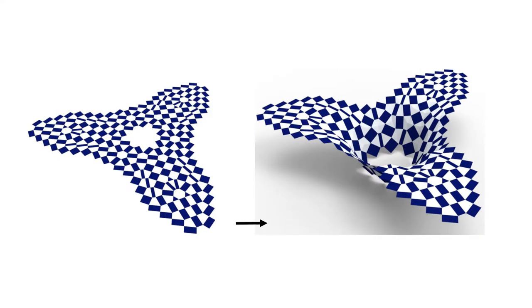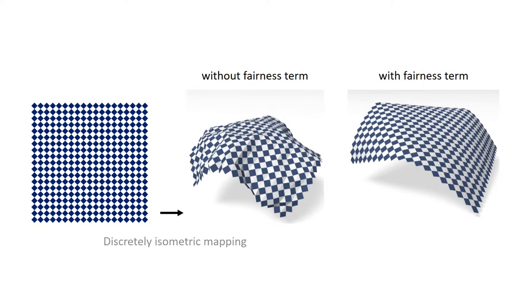By treating two patterns as discrete surfaces, a discrete map between the two can be established. The mapping is discretely conformal if corresponding rectangles have the same aspect ratio, and discretely isometric if corresponding rectangles are congruent. Mapping a planar domain in an isometric way generates patterns on developable surfaces.